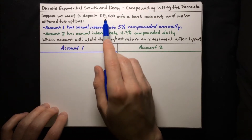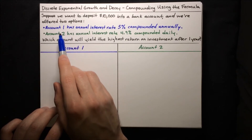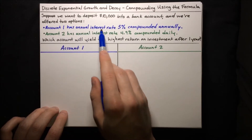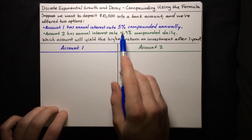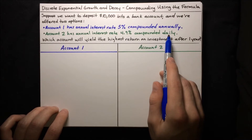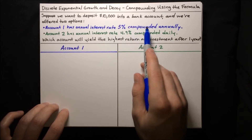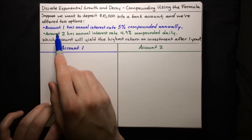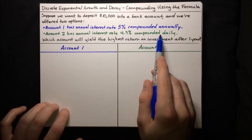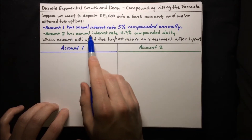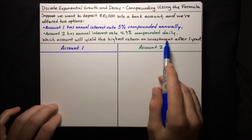Suppose we want to deposit $10,000 into a bank account, and we're offered two options: account 1 and account 2. Account 1 has annual interest rate 5% compounded annually, whereas account 2 has annual interest rate 4.9% compounded daily. So account 1 has a bit of a better interest rate, but it's only compounded annually, only once a year, whereas account 2 has a little bit lower interest rate, but it is compounded every day. So it's not really obvious which account is better. We want to find out which account will yield the highest return on investment after one year.